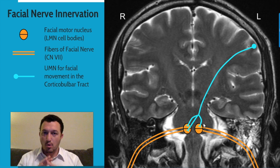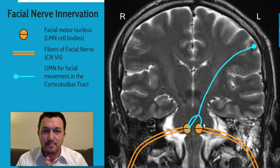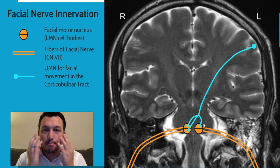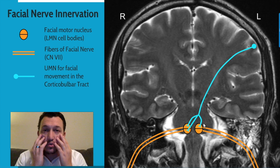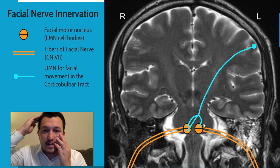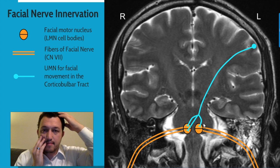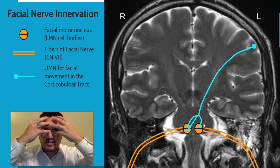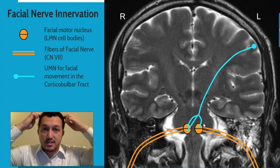Let me explain that one more time. The muscles that control facial expression on the lower face are only innervated by the motor cortex on the contralateral side, whereas the muscles of facial expression for the upper face are actually innervated and stimulated by the cortex from both sides.